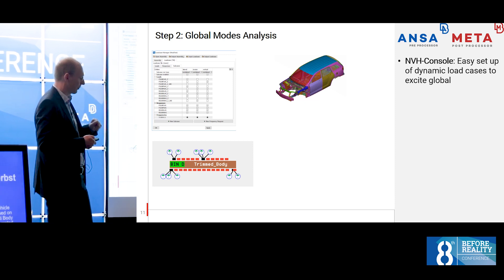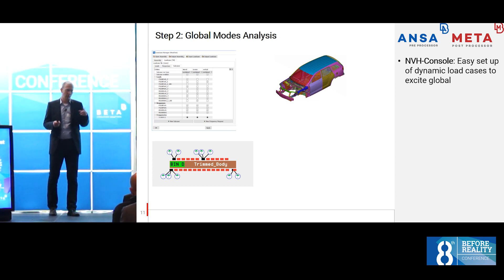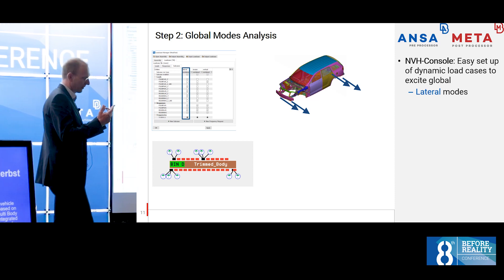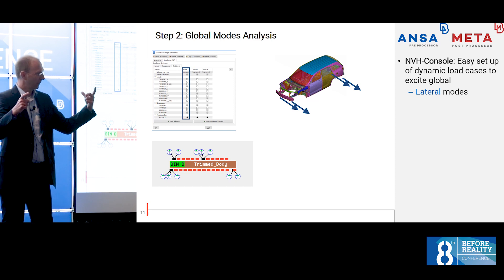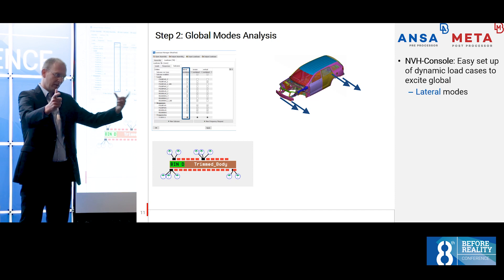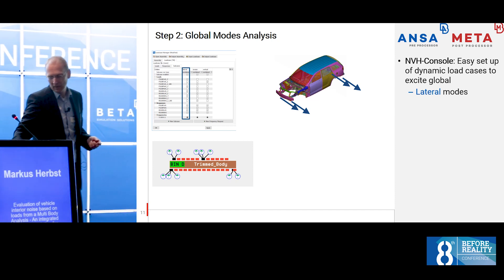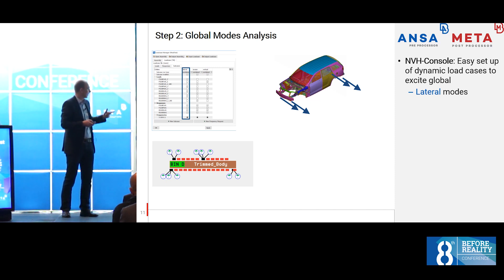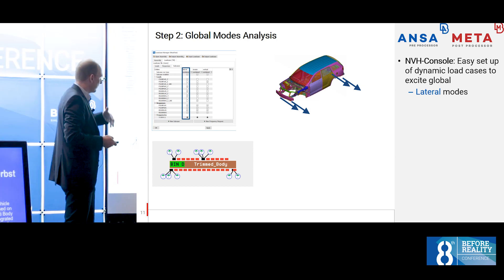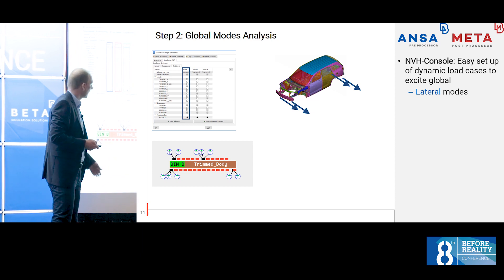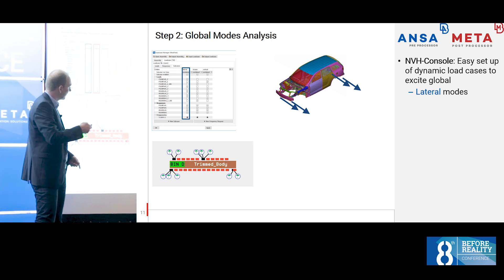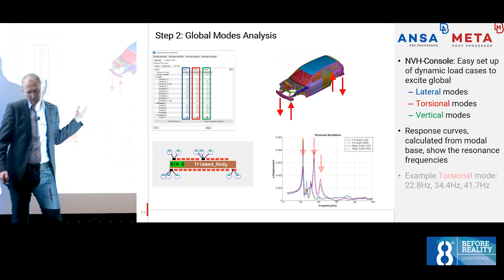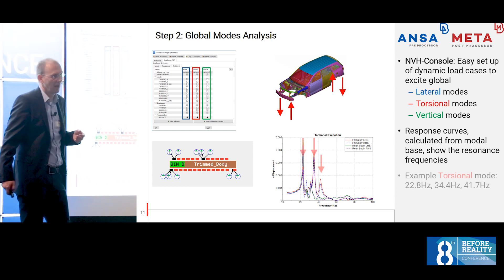The next step is interesting: we now have the modes for the trim body and we need to know the global modes for the multi-body dynamics, not just any modes. To check this, I applied some load cases. For example, if you have an attachment point at the rear left side, you excite it in the y-direction to excite lateral modes. For vertical modes you excite in z-direction, and torsional modes use a combination with different phase signs. I defined the load cases in NVH console, which also runs the jobs. For torsional excitation you can clearly see a few sharp global modes, and after 50–60 Hz there is nothing going on.